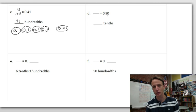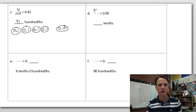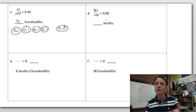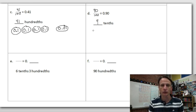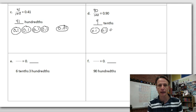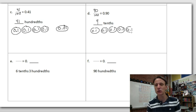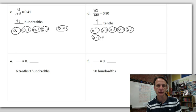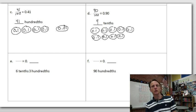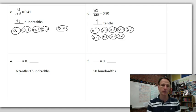Draw 0.1 discs — rows of five then reset: one, two, three, four, five, six, seven, eight, nine tenths. We don't have enough to make a dollar, just nine dimes. That's 90 hundredths done. Now six tenths three hundredths: put a 6 in the tenths place and a 3 in the hundredths place — that's 0.63. As a fraction: 63 over 100.